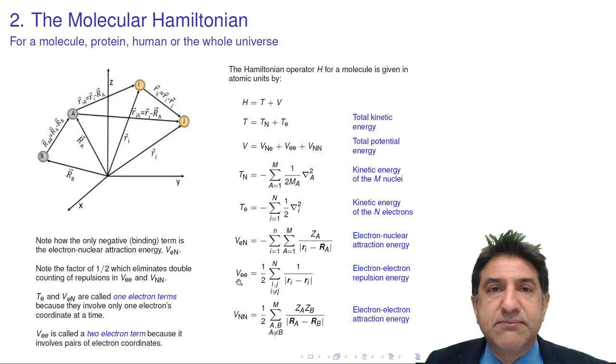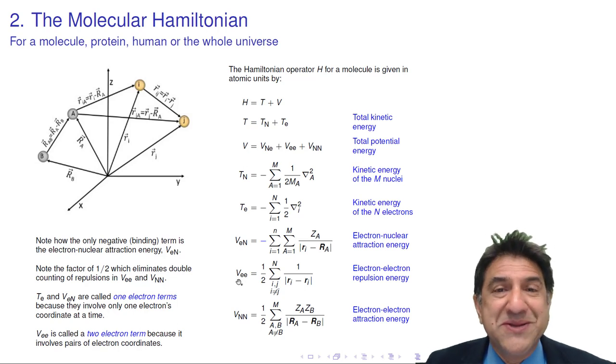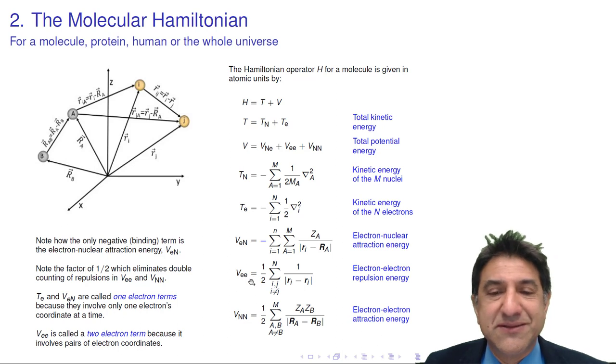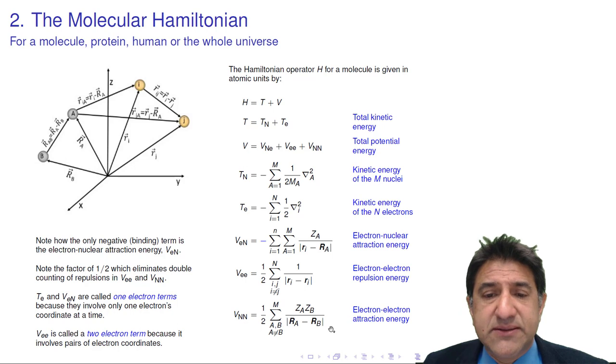So that's the Hamiltonian. You should be able to write this Hamiltonian down, because it's the Hamiltonian that we need to solve for the wave function. Be able to do that in your sleep if you become a quantum mechanician.